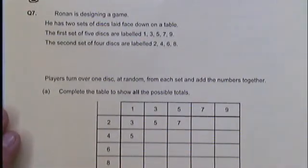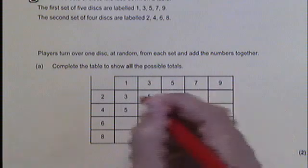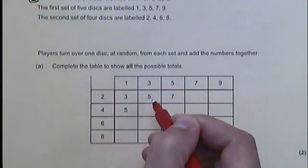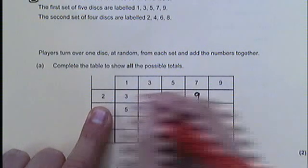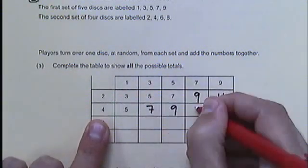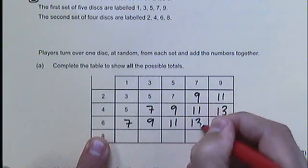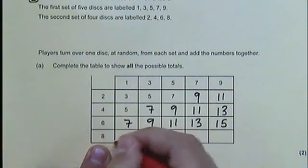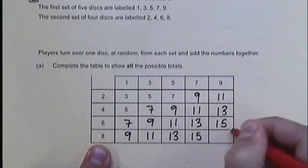If I look at the second question, this one's a bit more comprehensive — it's got multiple parts, but the last part is the bit we're really interested in. Ronan is designing a game about discs which are labelled and turned over, and then their scores are added together. The first part says complete a table to show what happens when the scores are added together: 3 and 2 makes 5, 5 and 2 makes 7, 2 and 7 is 9, 2 and 9 is 11 — keep filling in the table by adding up the numbers. You should see a pattern forming. 7 and 11 is 15, and 9 and 8 is 17.